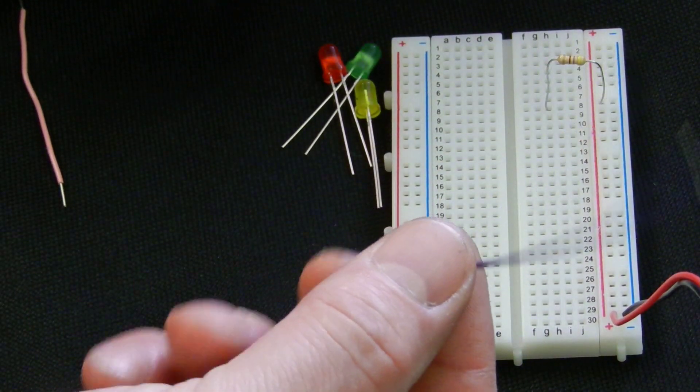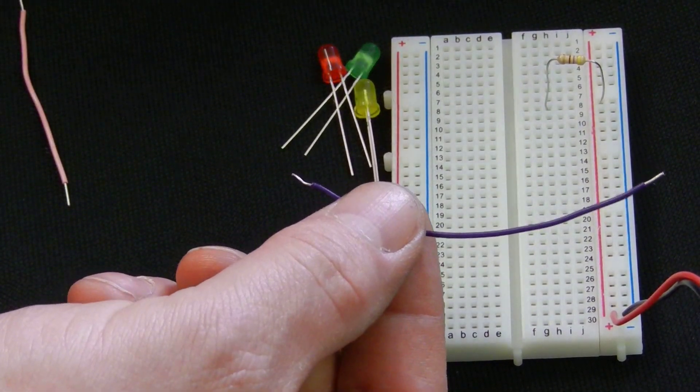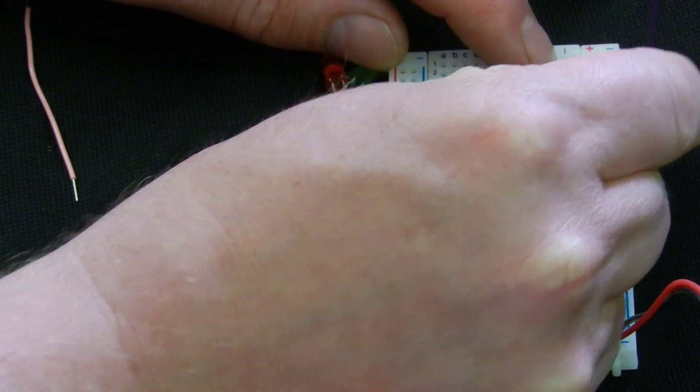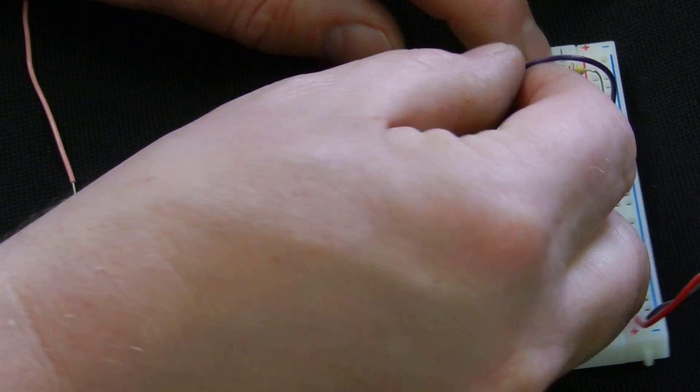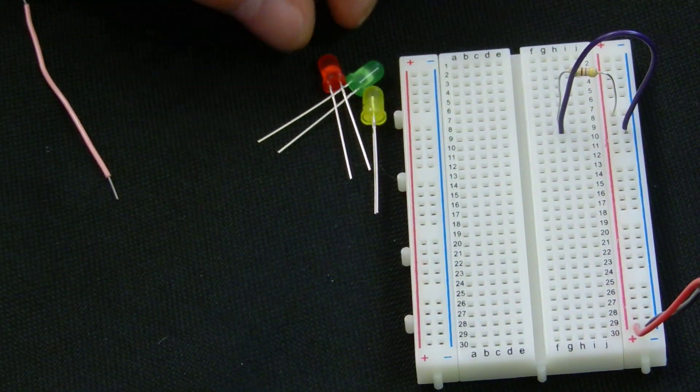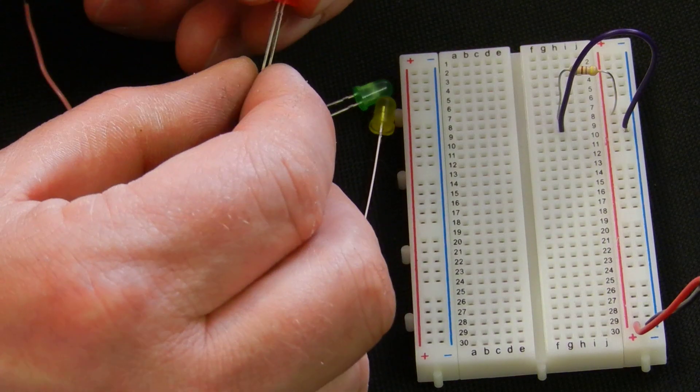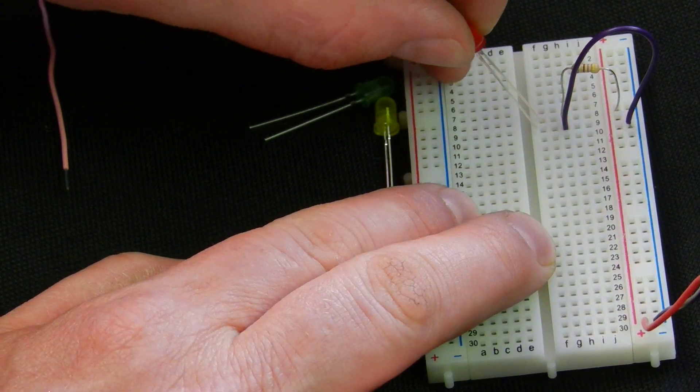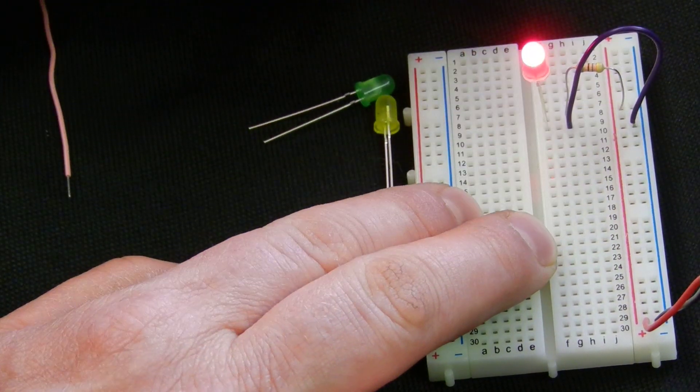So I will take one of my short jumpers which is just made out of a piece of wire and pop that into the negative and bring that across to the row below the resistor. What it gives me the opportunity to do is take my LED and join those two rows together by pushing it in.